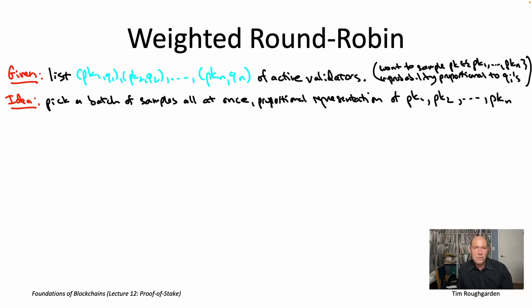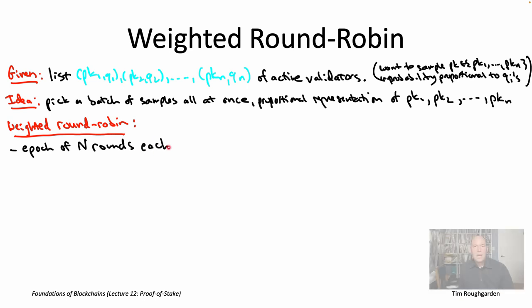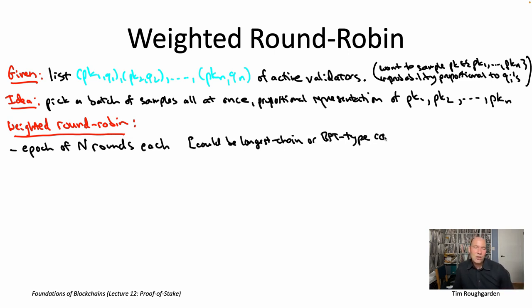Now, let me just fill in a little bit more of the details. What do I mean by weighted round robin? So we're going to be considering batches of rounds. I'm going to call those epochs. And there's going to be some parameter capital N which controls how many rounds are in an epoch. So that would be like 10,000 in our running example. And here when I say round, I mean it in the same sense as, for example, in a longest chain consensus protocol where you have one leader per round proposing a block. Or I mean it in the same sense as like in Tendermint back in lecture number seven, where in each round is kind of the four stages.